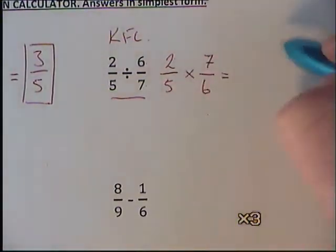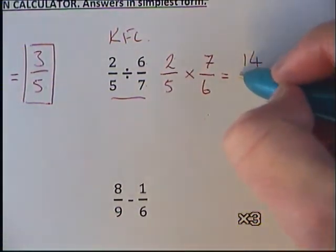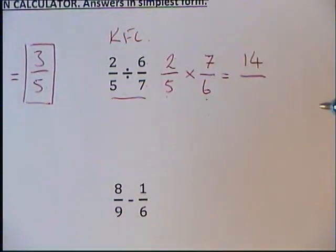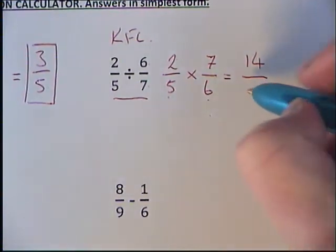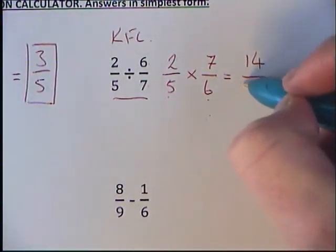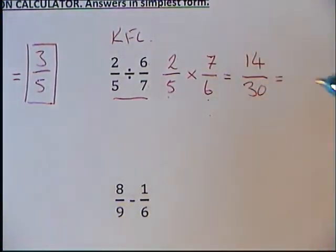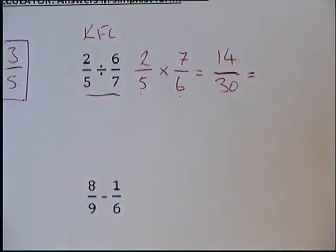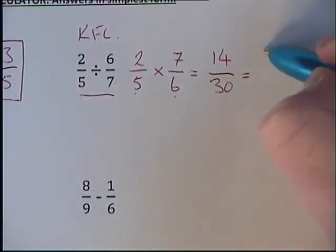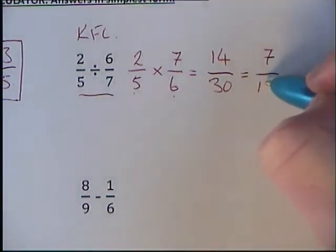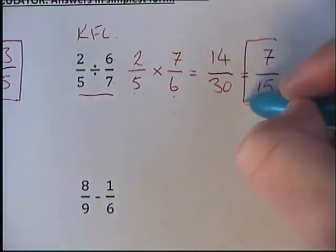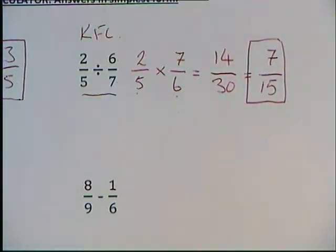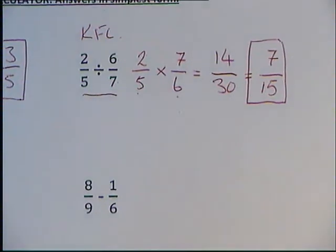So 2 times 7 is 14, 5 times 6 will give us 30. And then we can simplify that down, so we just end up with 7 over 15. That's our final answer.